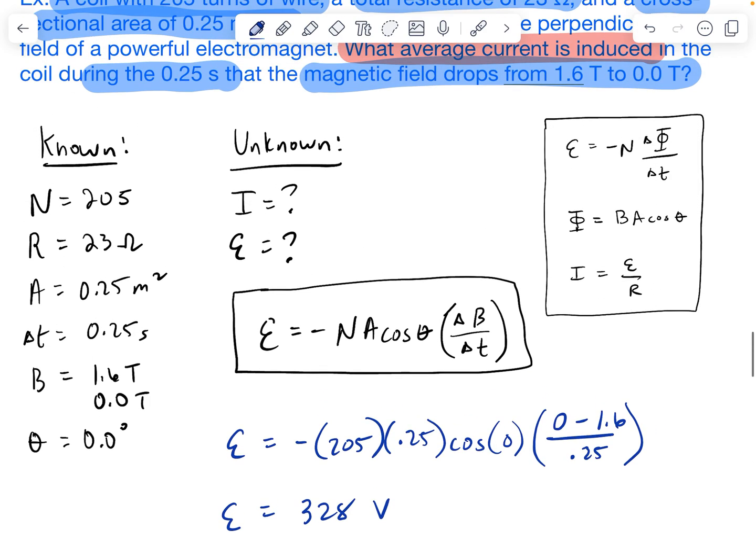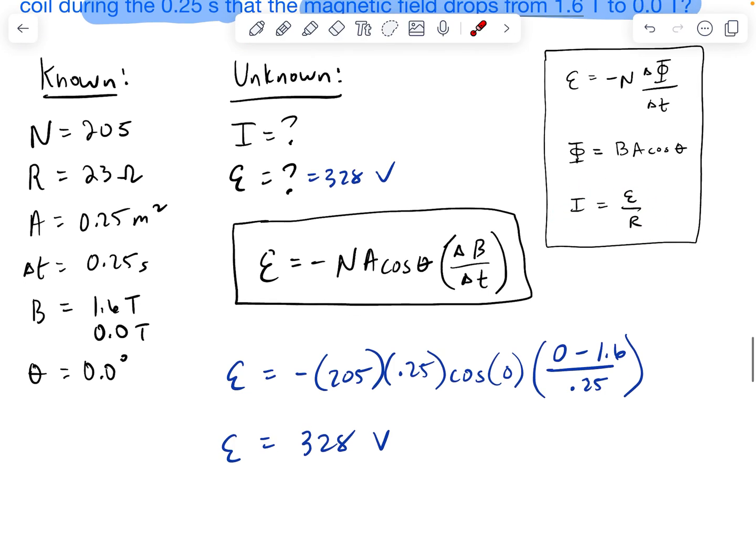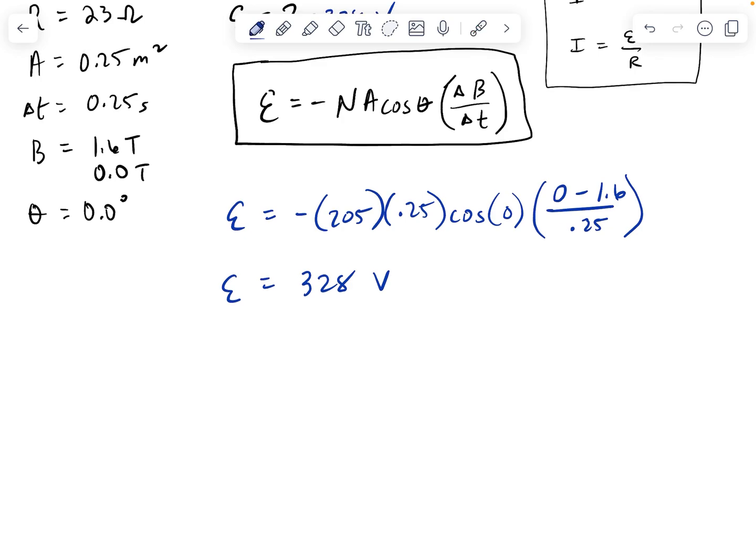And once again, the question is asking, what is the average current here? So now we're going to start implementing our kind of version of Ohm's law where the current equals epsilon over the resistance. So our current is going to be the 328 volts divided by the 23 ohms of resistance. And so we get a final answer of basically 14.3 amps of current.